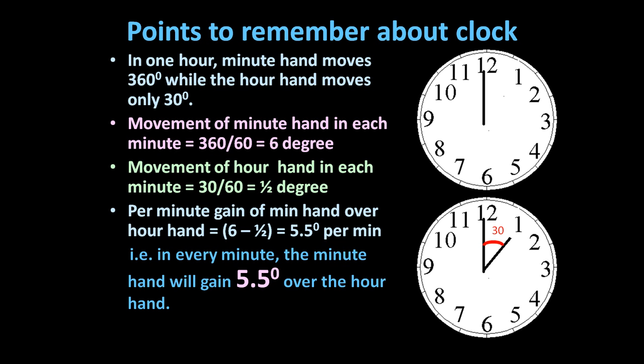So we just have to remember this point: every minute, the minute hand will gain 5.5 degrees over the hour hand. If they are moving for 10 minutes, the angle between them in 10 minutes will be 5.5 into 10, that is 55 degrees. We have to keep this much in our mind.